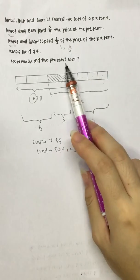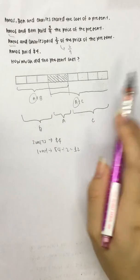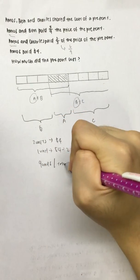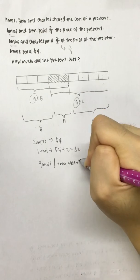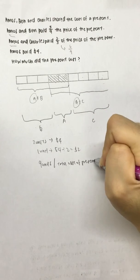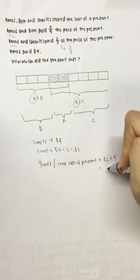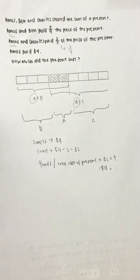The cost of the present would simply be a total of 9 units. The total cost of the present, $2 times 9, is $18.